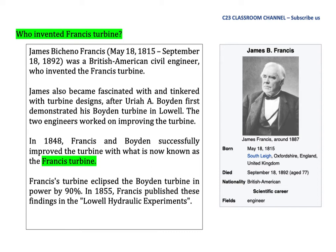James also became fascinated with and tinkered with turbine design after Uriah Boyden first demonstrated his Boyden Turbine in Lowell. The two engineers worked on improving the turbine. In 1848, Francis and Boyden successfully improved the turbine with what is now known as the Francis Turbine. The Francis Turbine eclipsed the Boyden Turbine in power by 90%. In 1855, Francis published his findings in the Lowell Hydraulic Experiments.